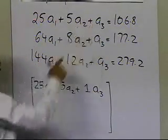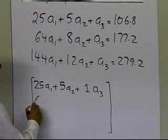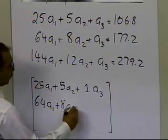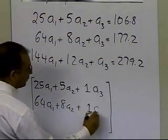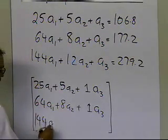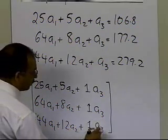plus 1 times A3. The reason why it's 1 is because the coefficient, of course, here is 1, so I'm going to write it plus 1 times A3. So I've got 64A1 plus 8A2 plus 1 times A3 here, and then I've got 144A1 plus 12A2 plus 1 times A3.